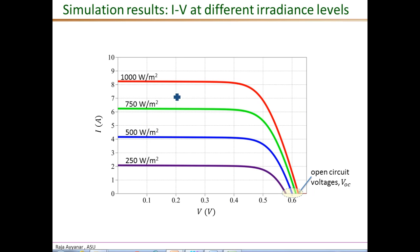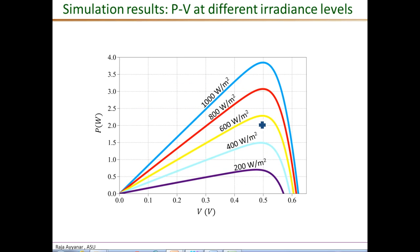These are the simulated results corresponding to the diode model shown in the previous slide. These four IV curves correspond to four different solar irradiance levels ranging from 1000 watts per square meter to 250 watts per square meter, and correspond to a single cell. The open circuit voltage is just above 0.62 V at the highest irradiance level. Similarly, these plots correspond to the power-voltage characteristics obtained from the same PV model, shown for five different values of irradiance levels.